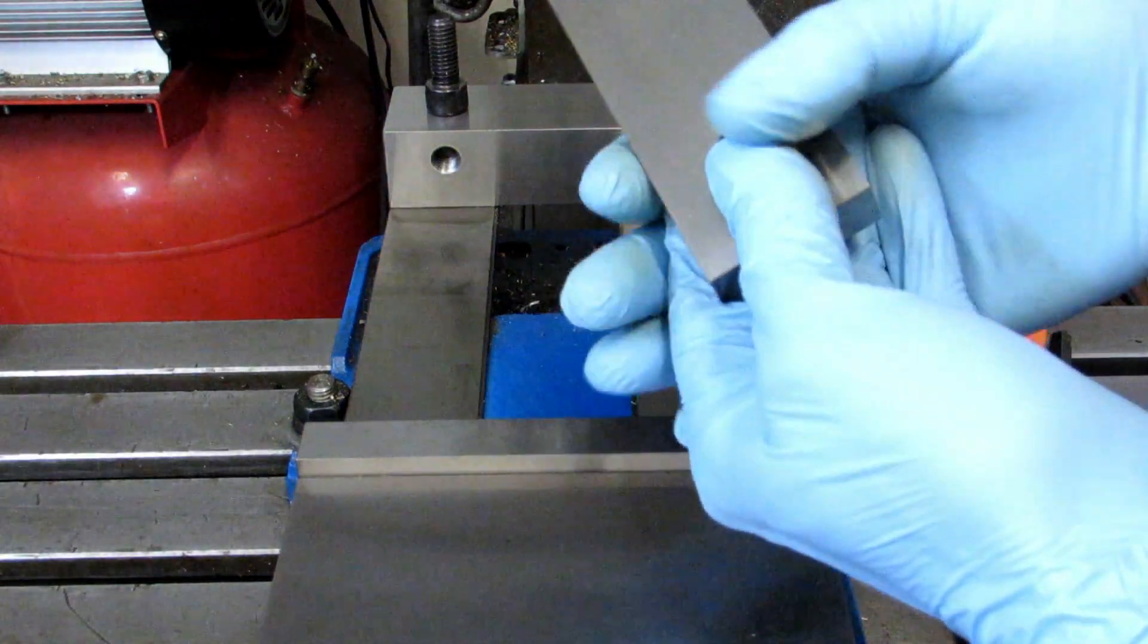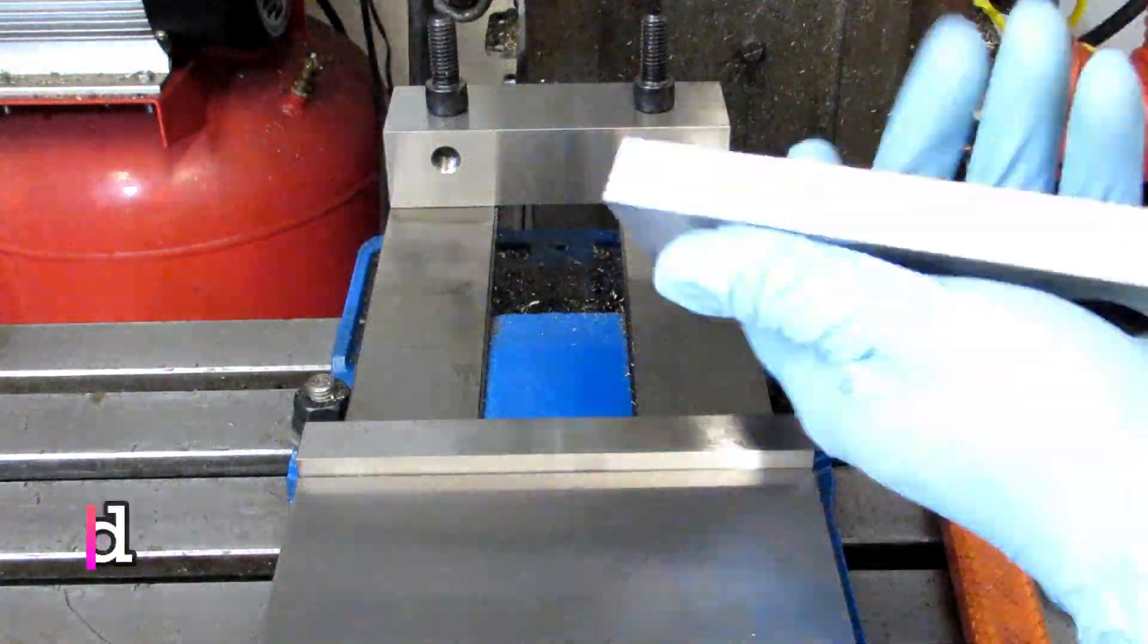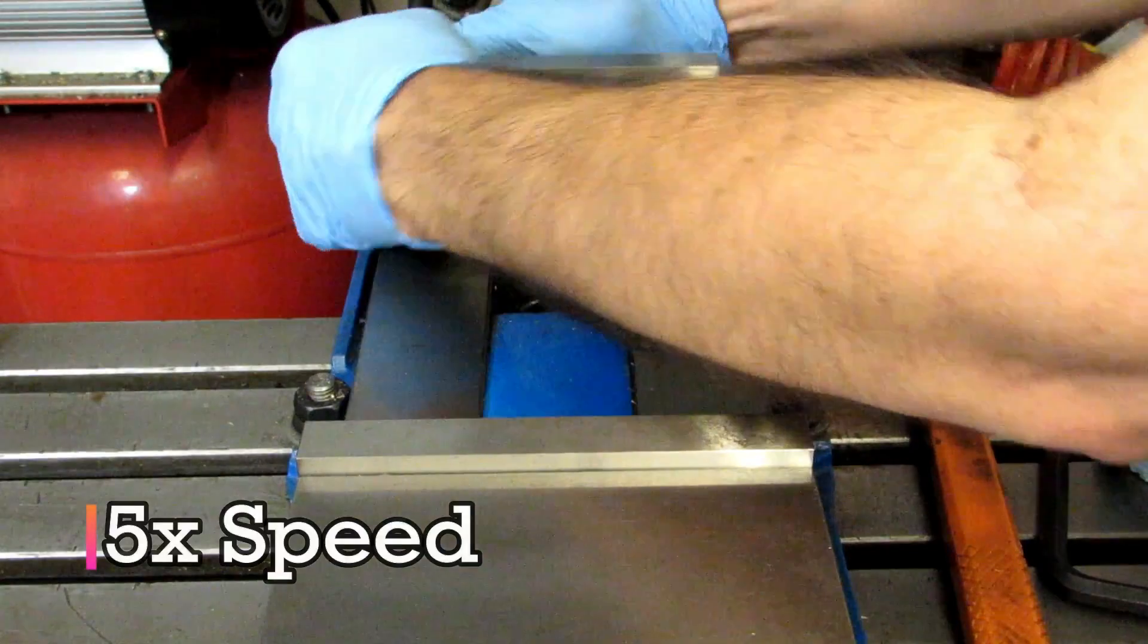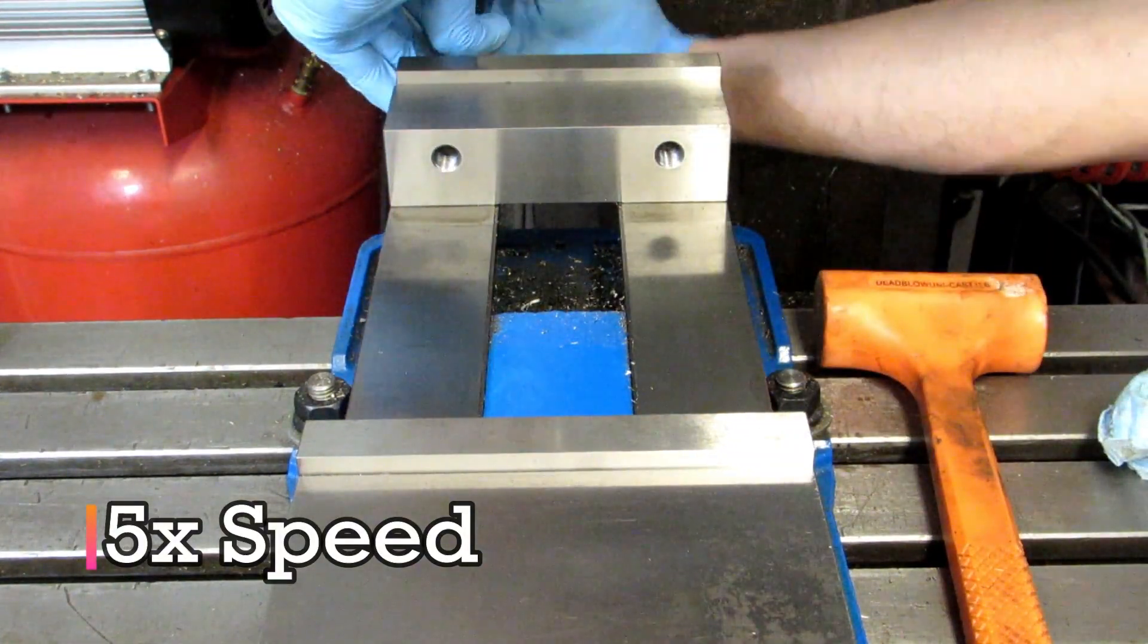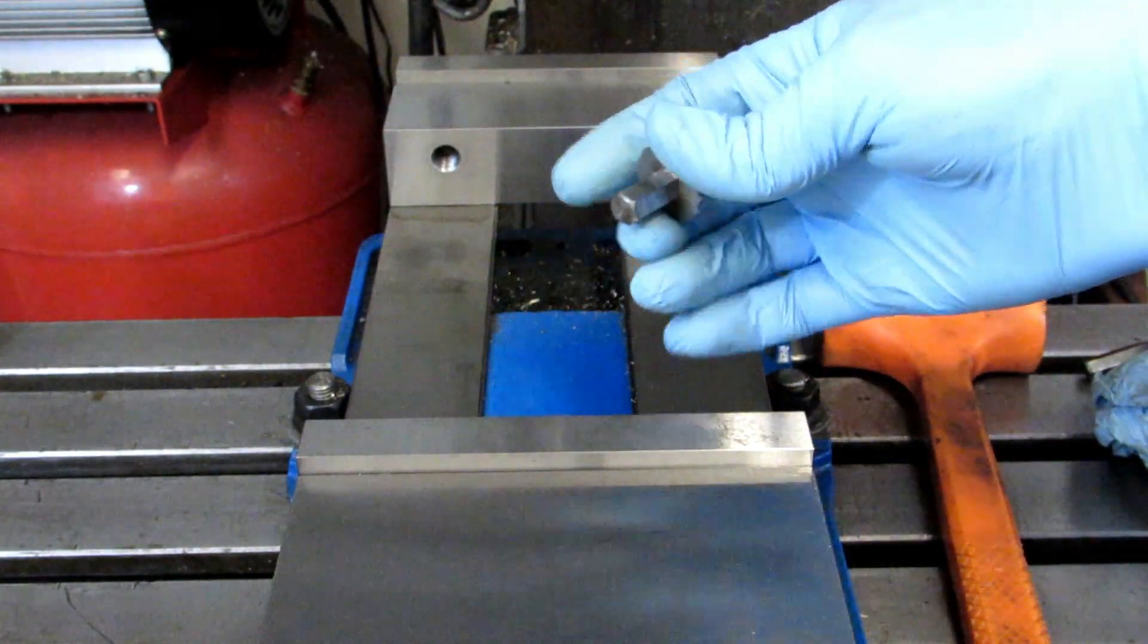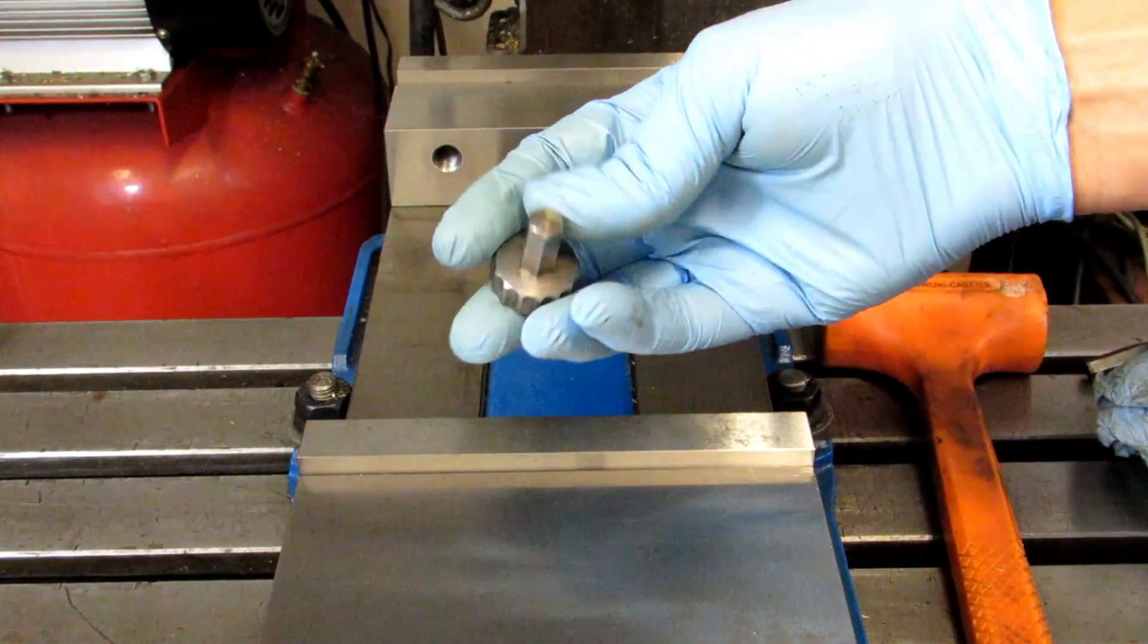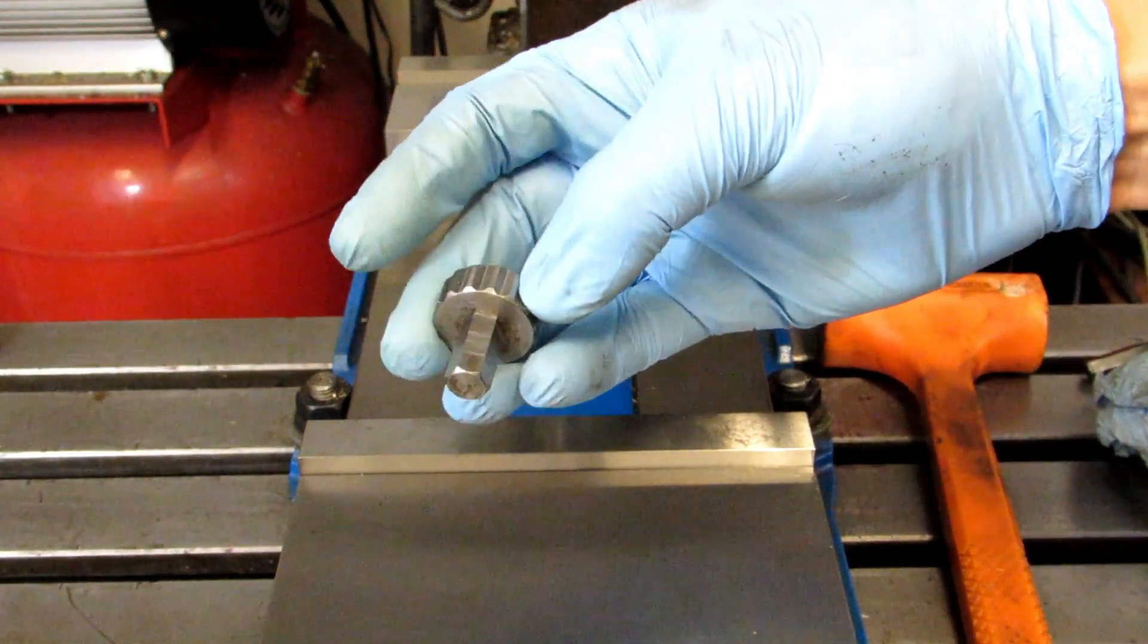Now anytime you take the vise jaws off you want to make sure that you clean them thoroughly. I've got a little tool that I made for getting the jaws loose quickly, so I've already used my allen wrench to loosen up these bolts. This is just a 3/8 hex on the end of a piece of one inch stock that I kind of cut these flutes in. Real easy to make.